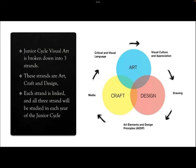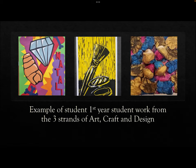All three strands are held together by our five elements of art, which are visual culture and appreciation, drawing, art elements and design principles, media, and critical and visual language. Here is an example of first-year student work from the three different strands — a beautiful poster design, a lino print, and a 3D clay piece, all done by incoming first-year students.